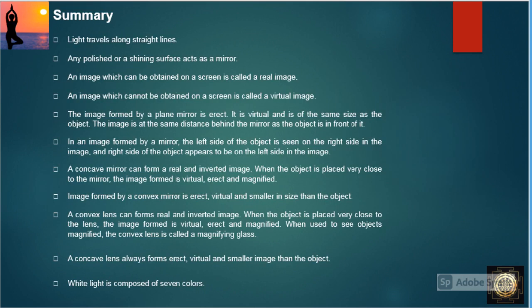Let us summarize what we have learned in this chapter. Light travels along straight lines. Any polished or shining surface acts as a mirror. An image which can be obtained on a screen is called a real image. An image which cannot be obtained on a screen is called a virtual image. The image formed by a plane mirror is erect, virtual, and of the same size as the object.